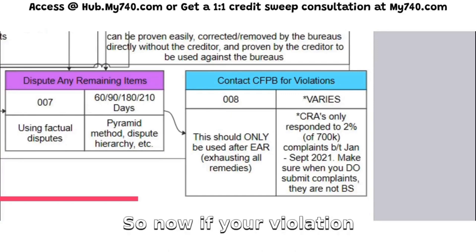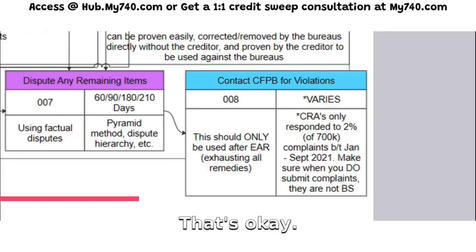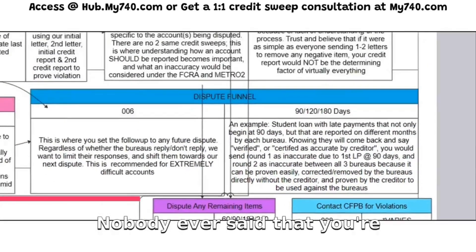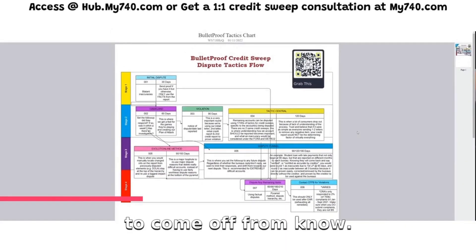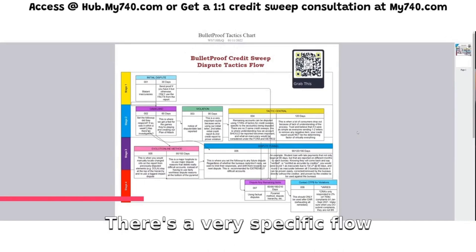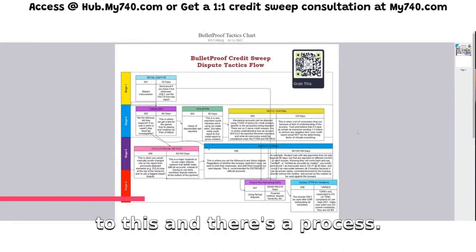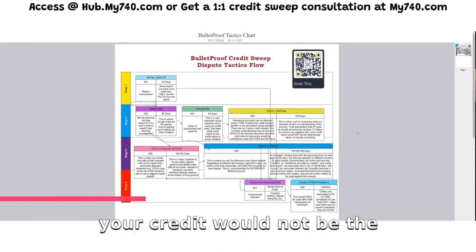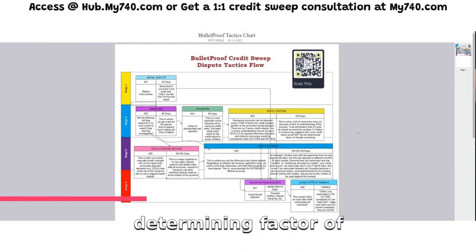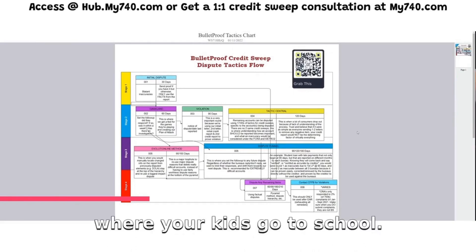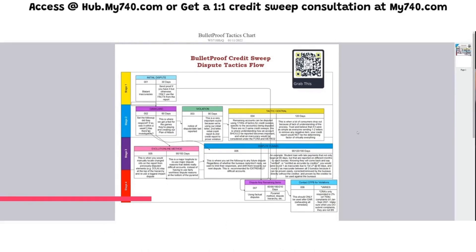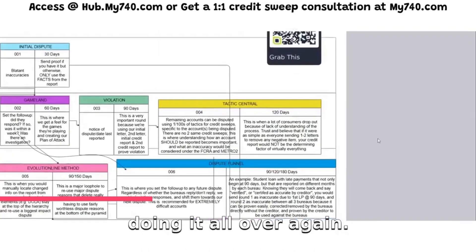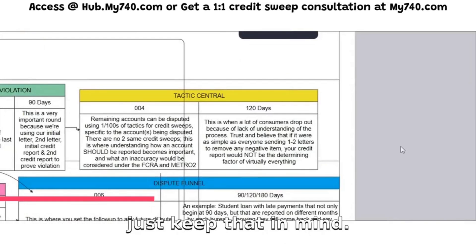If your violation round doesn't work, that's okay. Nobody ever said you're going to send one or two disputes and your negative items are going to come off. There's a very specific flow and process to this. Your credit would not be the determining factor of basically everything — where you live, where you work, how much money you have, where your kids go to school — if it were as simple as just messing up your credit and doing it all over again. So just keep that in mind.